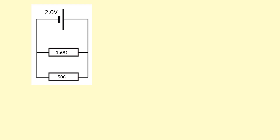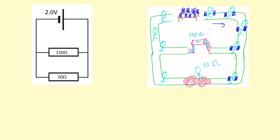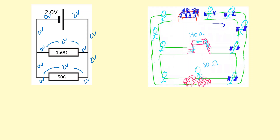Here is the parallel circuit. It doesn't matter which order you put the 50 and 150 ohm resistors — they're still in parallel. Here's the model for it. The first thing to spot with a parallel circuit is that the potential difference across things that are in parallel must be the same. If each charge leaves with 2 joules of energy and it's not going to use that on the wires, and it has to come back with zero, you can see it's going to use 2 volts across each branch. The potential difference across parallel components is the same.